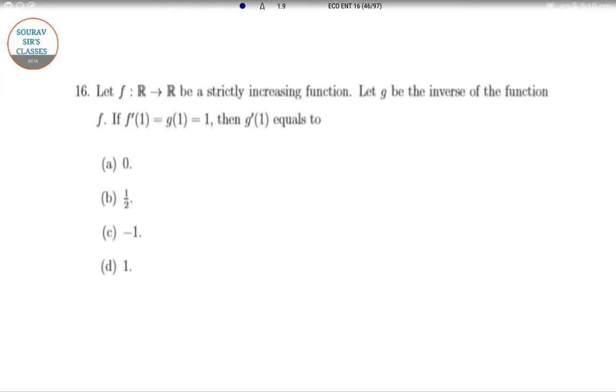It is given that f of x is a strictly increasing function. So strictly increasing, how to know a function is increasing? If f dash x greater than 0, then it is strictly increasing. If f dash x is greater than equal to 0, it is only increasing.